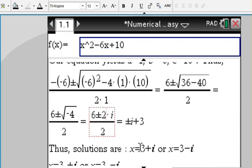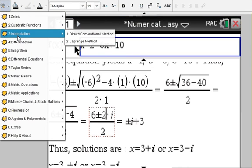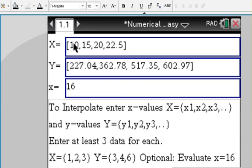Interpolation—two options, either the Lagrange method or the direct or conventional method. You enter, let's say, five x values and five y values. They're predefined; you can use your own, of course. And an x value that's optional is used to evaluate that polynomial.